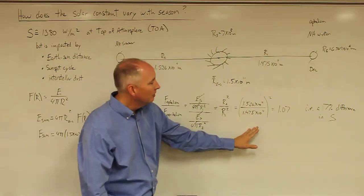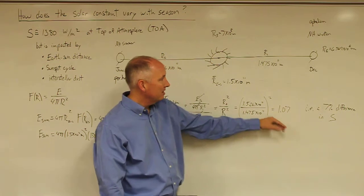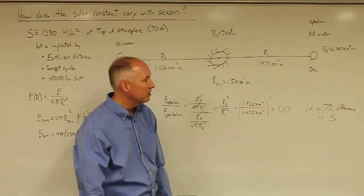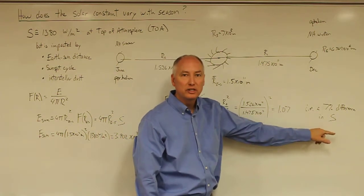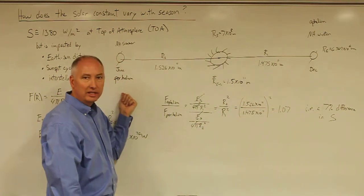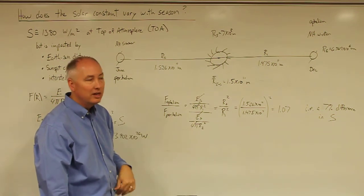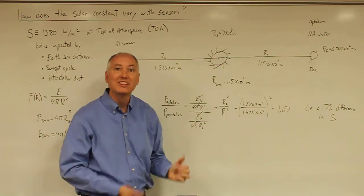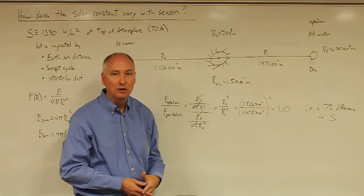Plugging in those numbers, we'll end up with a ratio of 1.07. And what that means is that when the Earth is closer to the Sun during the Northern Hemisphere winter, it actually is receiving 7% more solar radiation than when it's at perihelion in the Northern Hemisphere summer when we're further away from the Sun. Clearly that's in the opposite direction of our seasons, and this is not an explanation for the seasons that we observe on our planet.